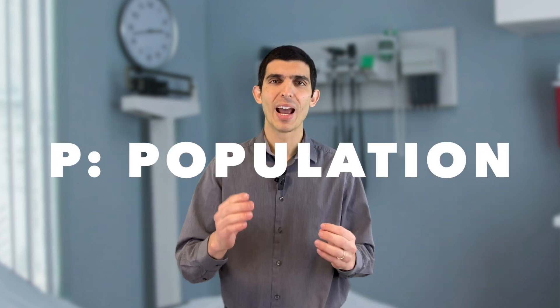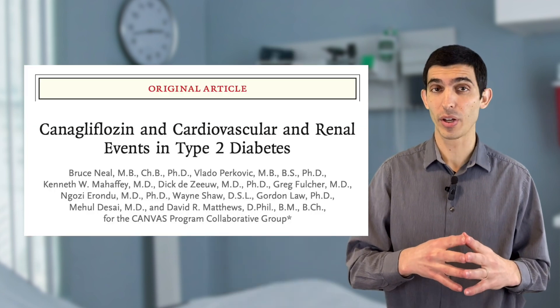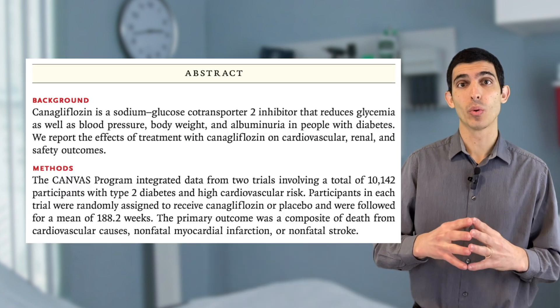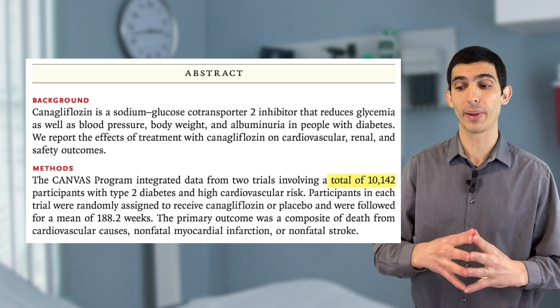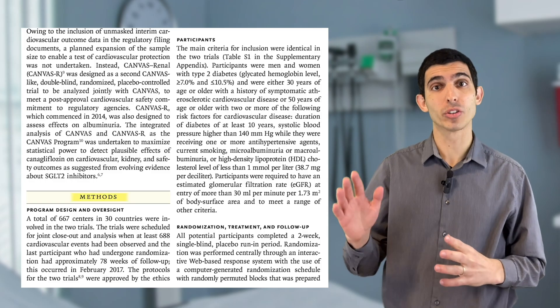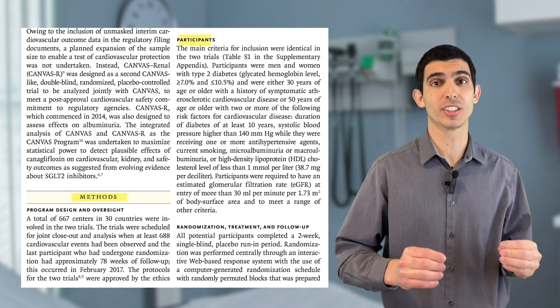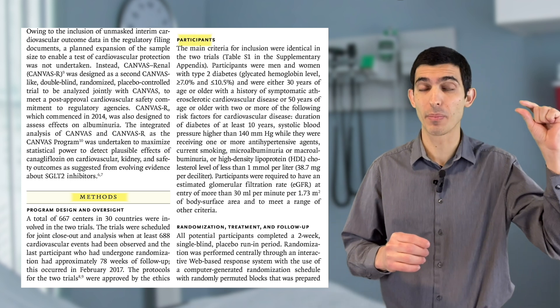To help you with these situations, I want to introduce a framework called PECON. This acronym starts with the letter P — P for population. You can get the population from the abstract, but you should also look at the methods section. In the Canvas trial, published in the New England Journal of Medicine, the abstract shows they enrolled 10,142 patients with type 2 diabetes and high cardiovascular risk. That's the population, but the methods section gives more detail on exactly how they defined high cardiovascular risk.